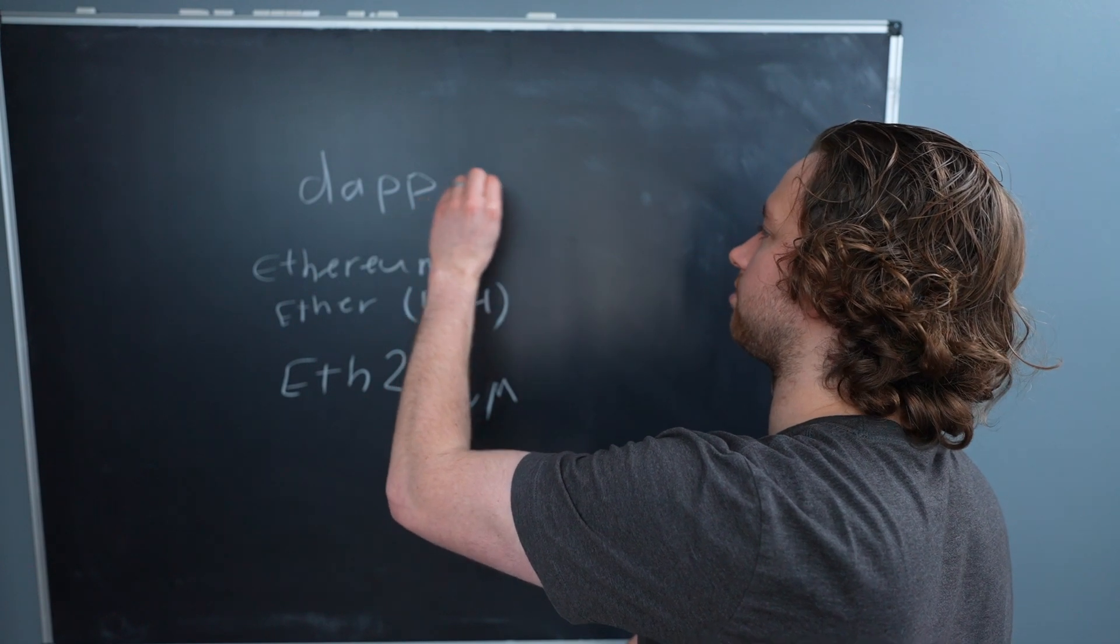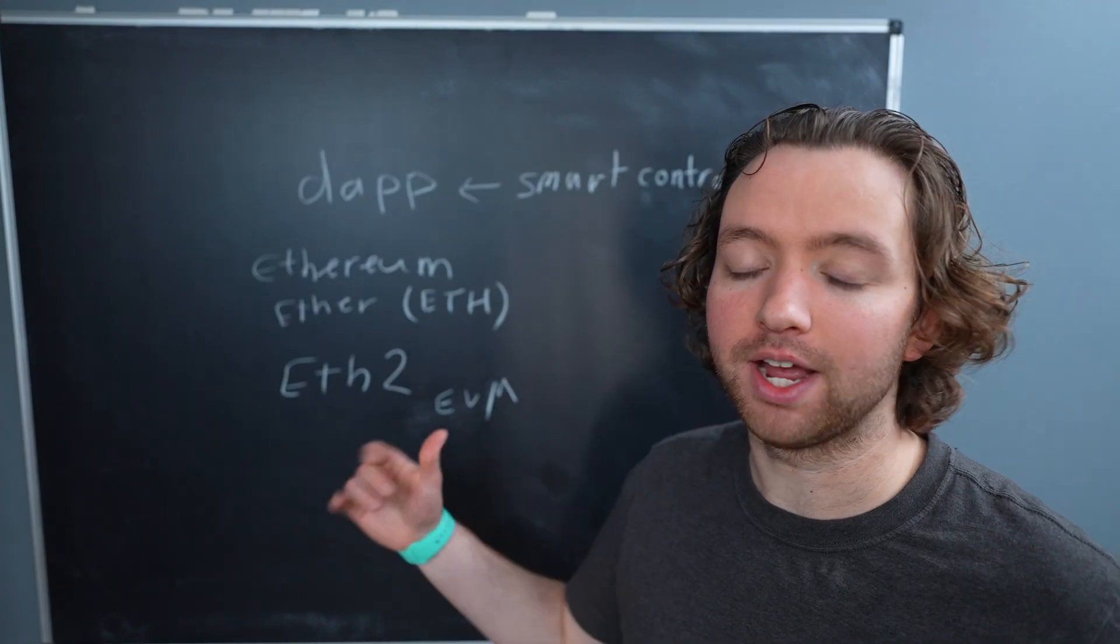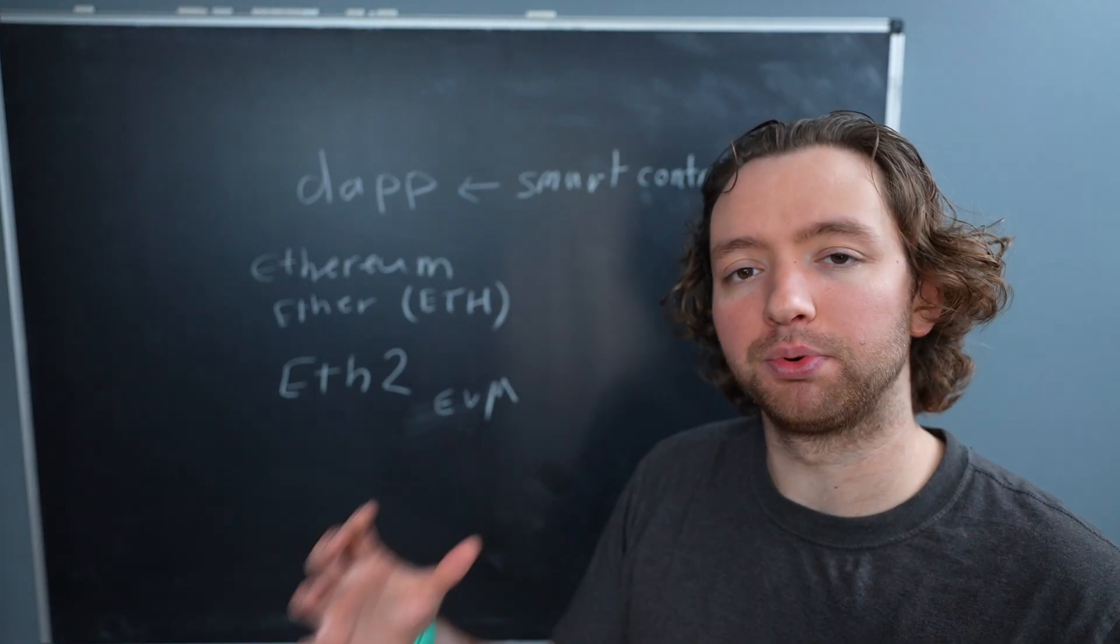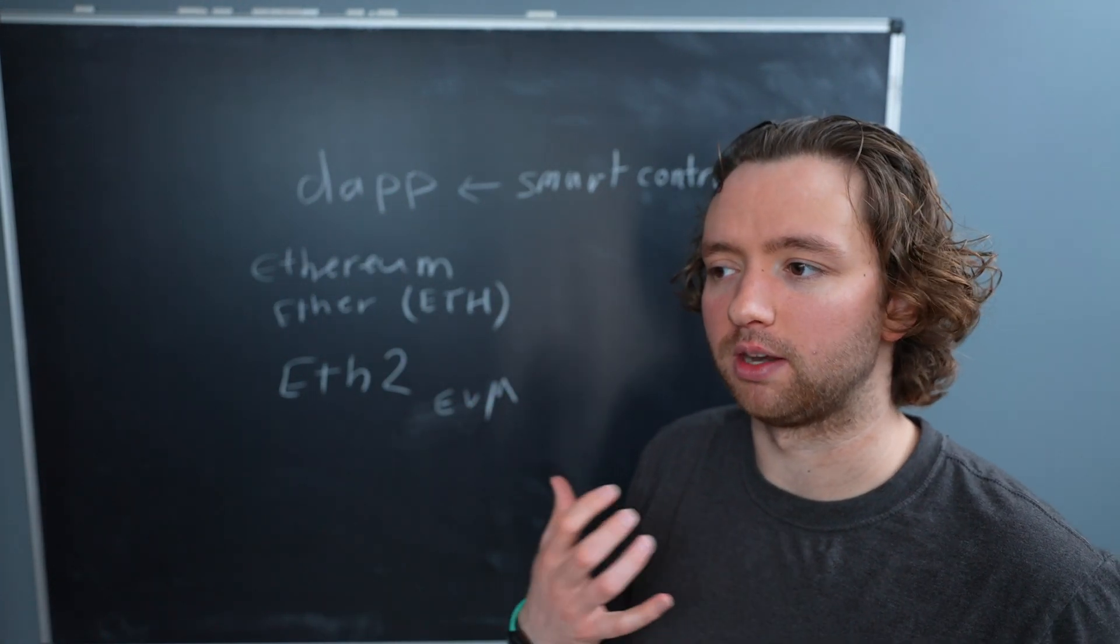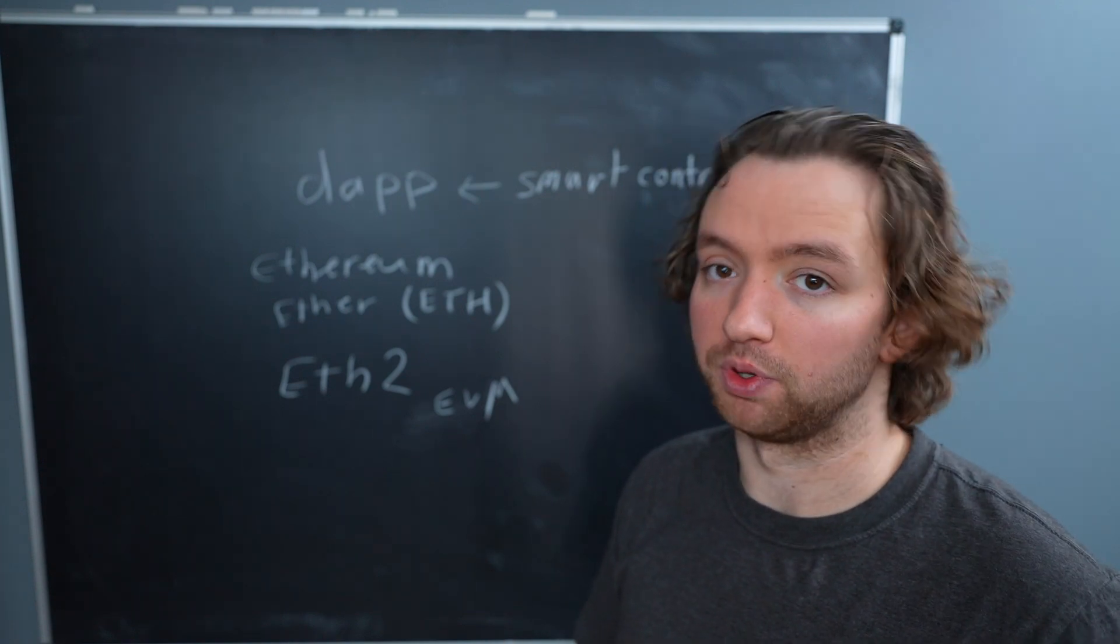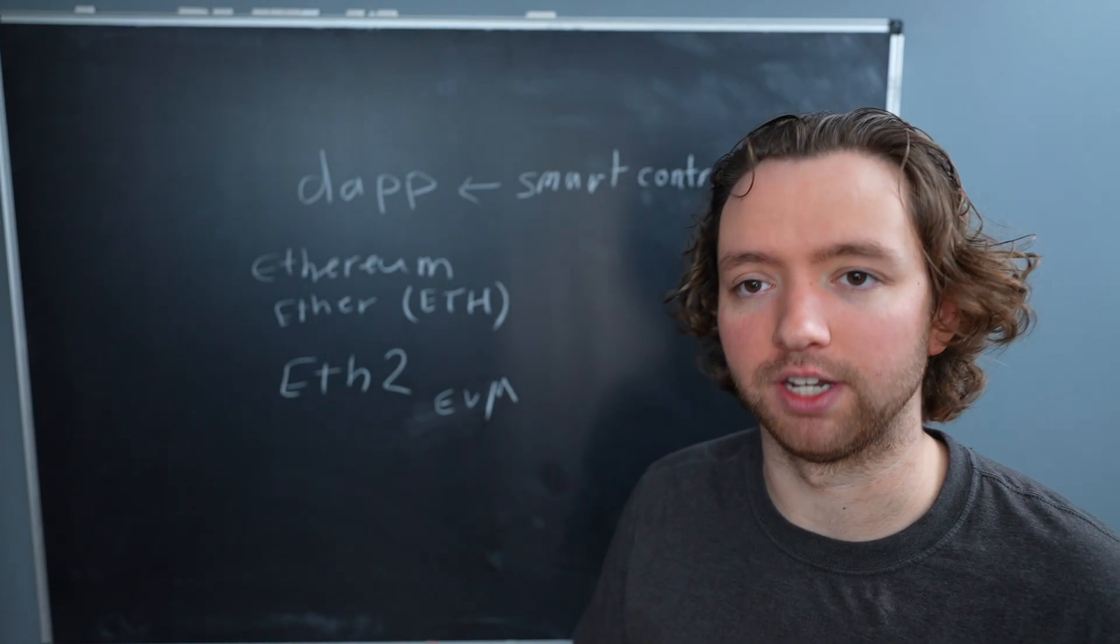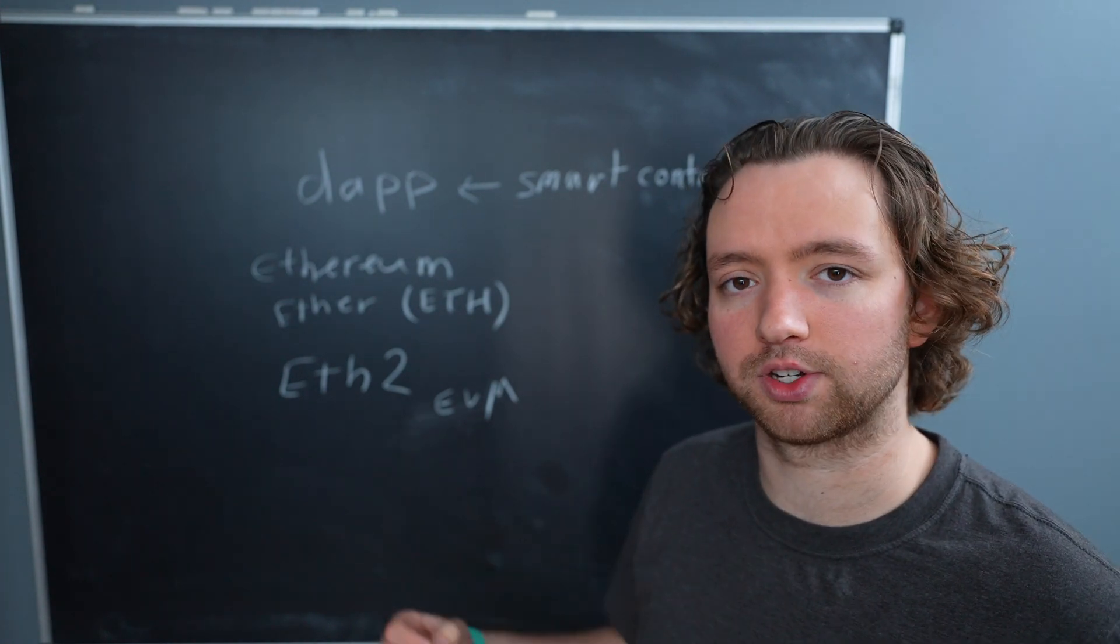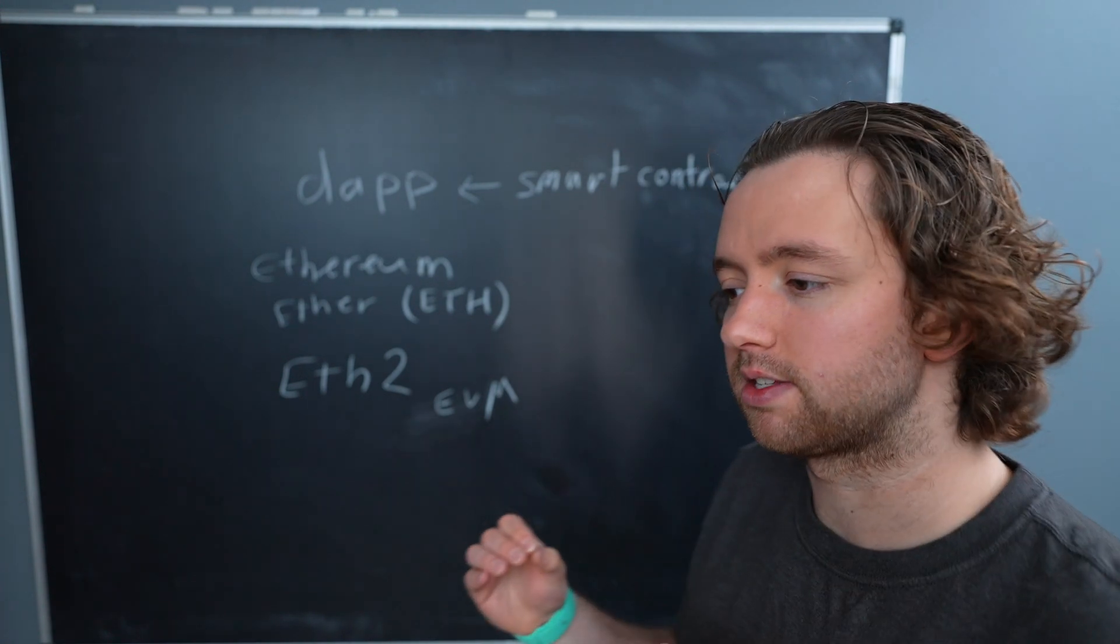So smart contracts power decentralized applications. So now within this blockchain we can build programs, and now within a program we can do a lot of stuff. And we can even create software with bugs, for example we could make an infinite loop or we could do something that tries to break the blockchain.